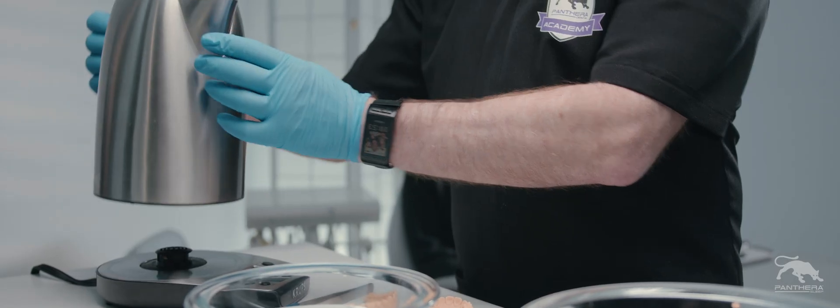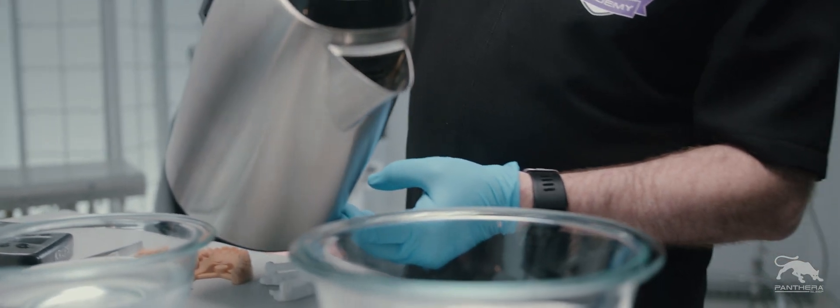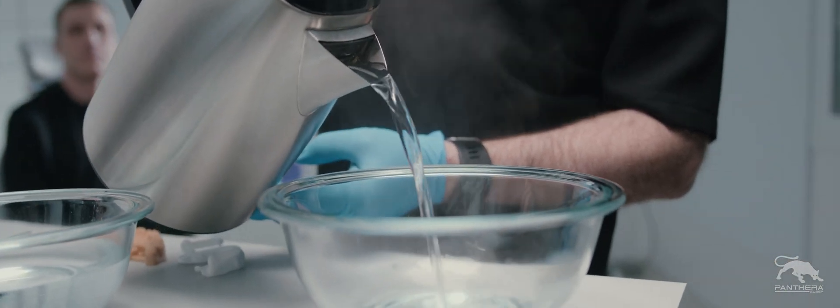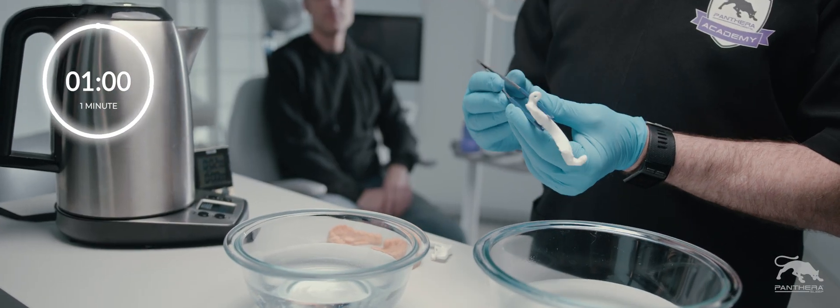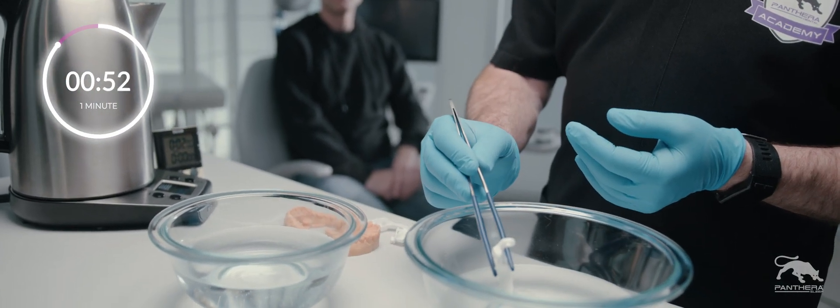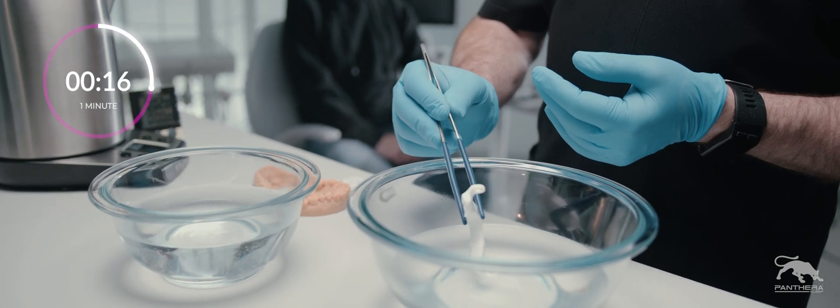Detach the rods from the oral appliance. Once the appropriate temperature is reached to slightly soften the appliance without risk of deformation, use pliers to dip the side of the splint that needs to be adjusted in hot water for about 1 minute.